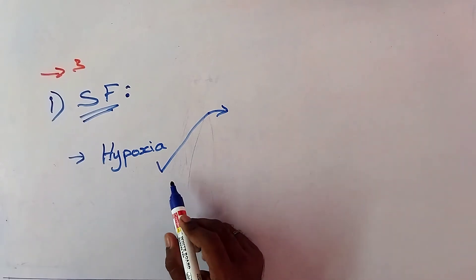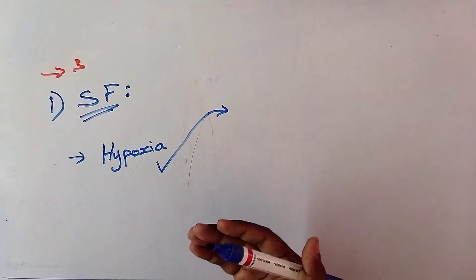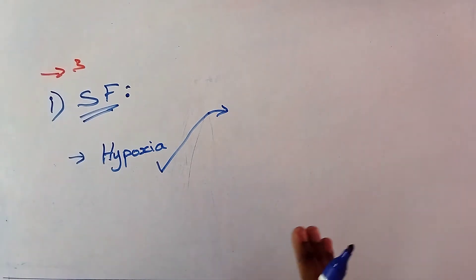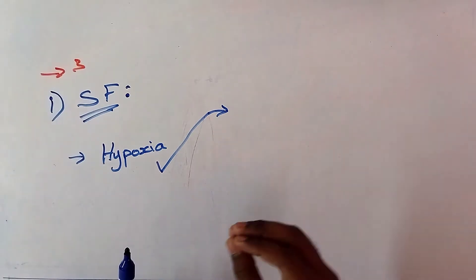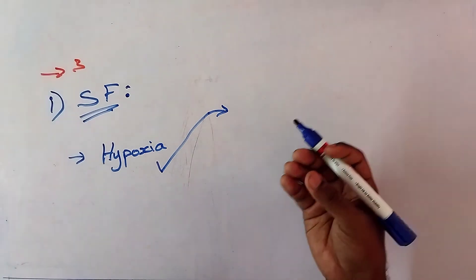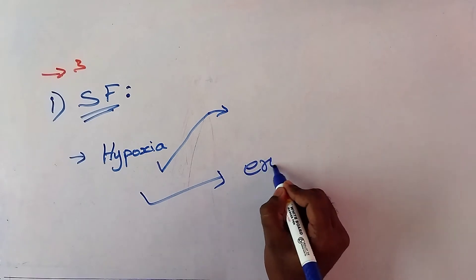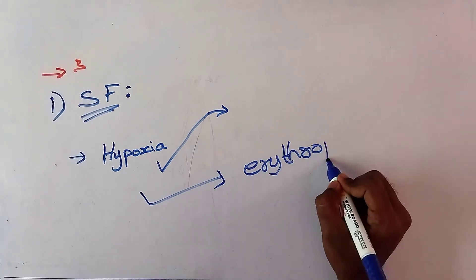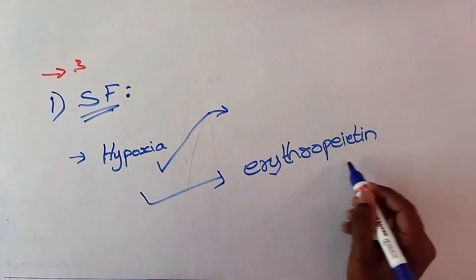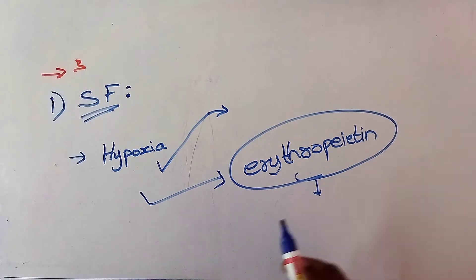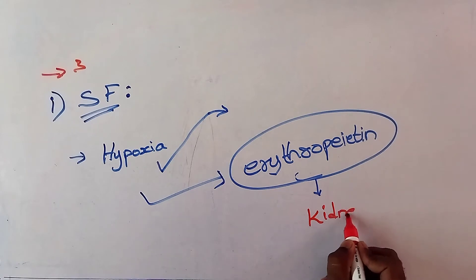When oxygen is reduced in our body, this condition stimulates erythropoiesis by inducing secretion of erythropoietin. If there is reduction in oxygen in our body, there is secretion of erythropoietin. This erythropoietin hormone stimulates the formation of erythropoiesis. These erythropoietin hormones are released from the organ kidney.